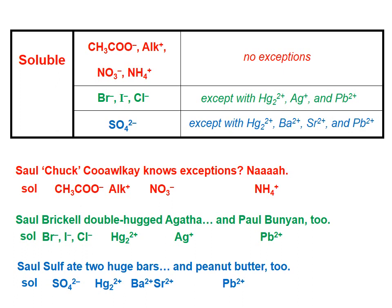Let's look up near the top at the green line. The bromide, iodide, and chloride ions tend to form compounds that are soluble in aqueous solution. However, there are a few exceptions, and they're listed here on the right. This is called the mercury-1 ion, the silver ion, and the lead-2 ion.